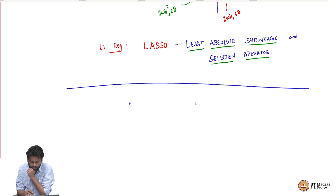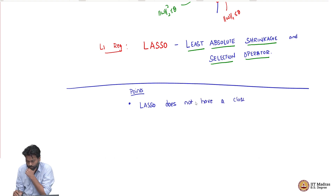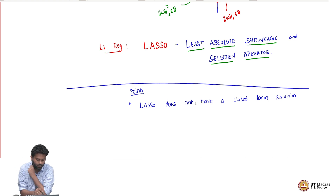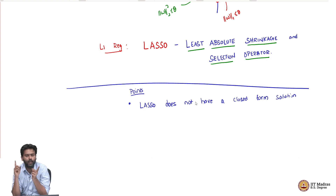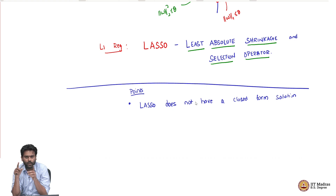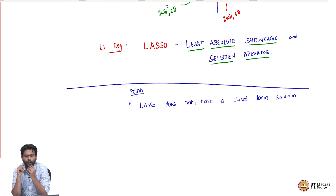Point number one is that lasso does not have a closed form solution. Remember, ridge regression had a closed form solution: x x-transpose plus lambda I inverse x-transpose y. Lasso, on the other hand, you cannot take the derivative and set it to zero, simply because the problem is not differentiable at zero — your penalty is not a differentiable function. So you cannot take the gradient, set it to zero, and solve for it.